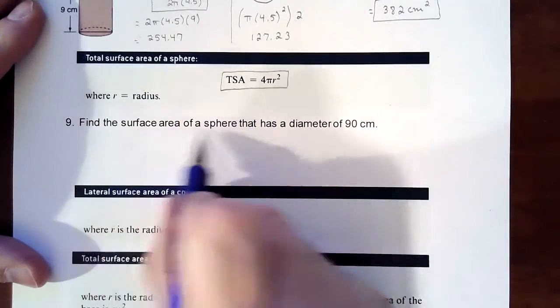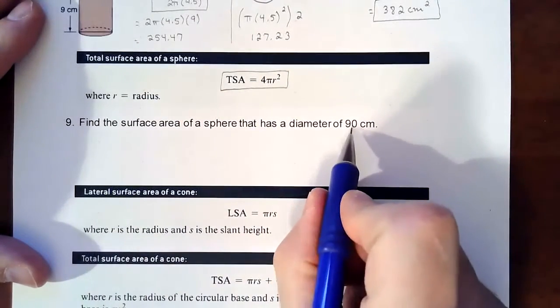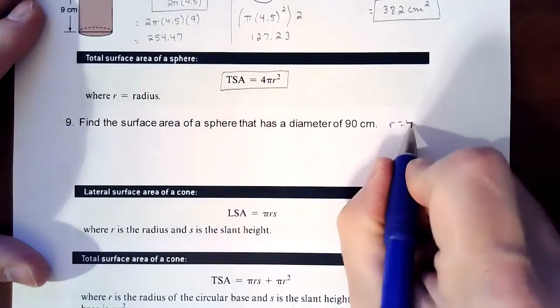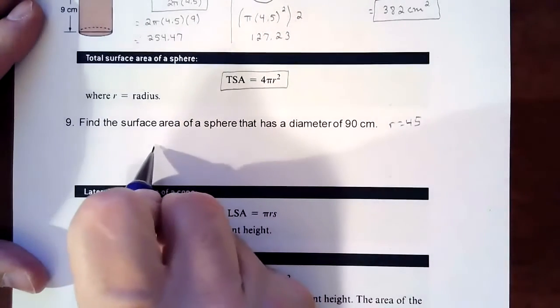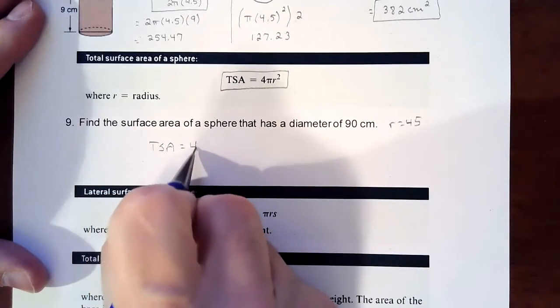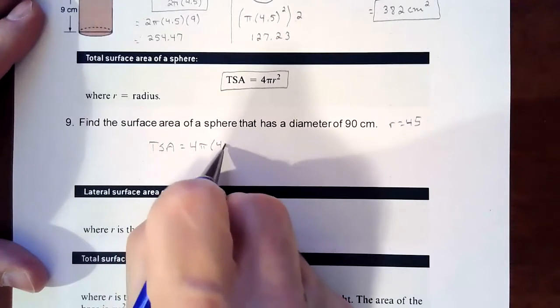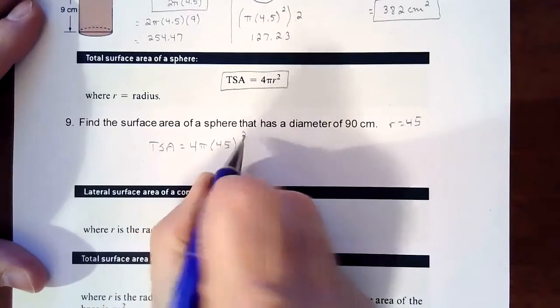So if we're finding the surface area of a sphere with a diameter of 90, that means our radius is 45. And so our surface area, the total surface area, is 4 times π times 45 squared.